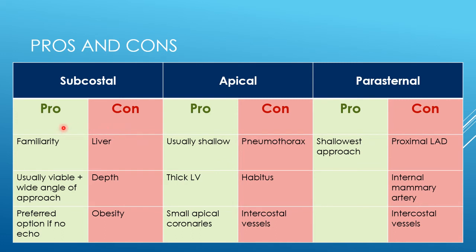Looking at pros and cons: the subcostal approach is the one most people are most familiar with, and it is usually possible to drain pericardial fluid from this direction. There's usually a wide angle error margin, although often not as much depth error margin. It's the preferred option when no anatomical information is available. We must be careful to avoid the liver, and in obese patients the distance between skin and pericardial effusion can be significant, sometimes requiring a longer needle — which is why familiarity with the long pericardial synthesis needle technique is important.